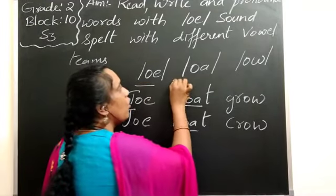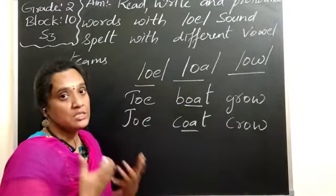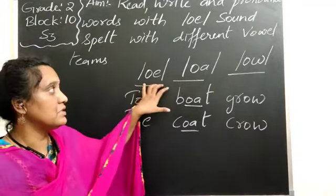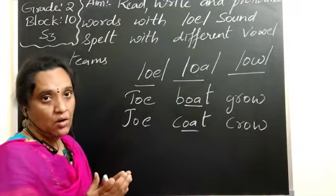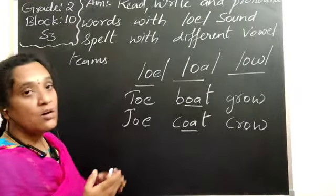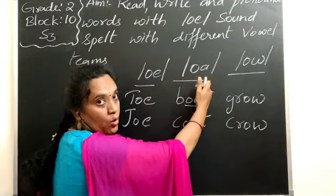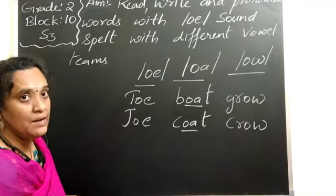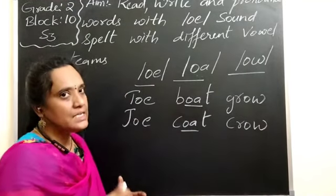So we observe that O-E, O-A, and O-W are all vowel teams. O-W is not a traditional vowel pair, but still it gives a vowel-team O sound. So these three teams — O-E, O-A, and O-W — are all giving the vowel sound of O. These are the three different vowel teams that give the O sound.